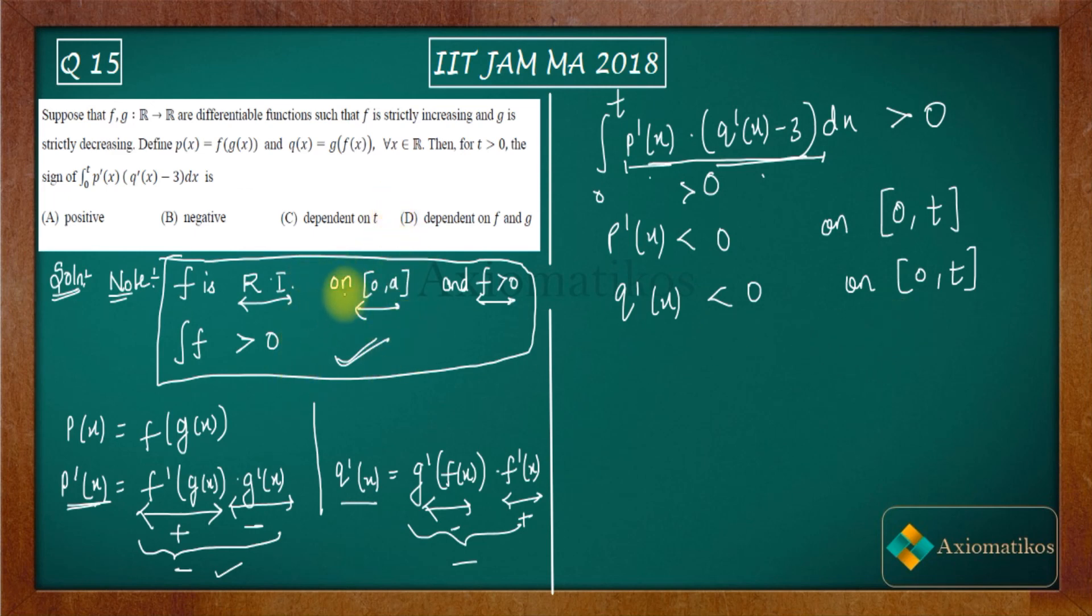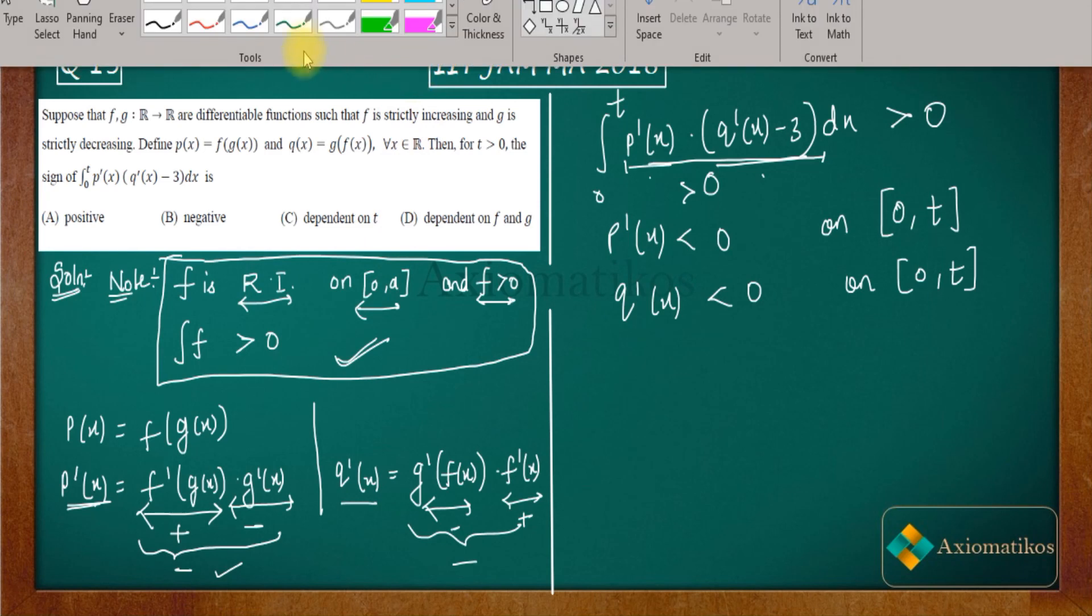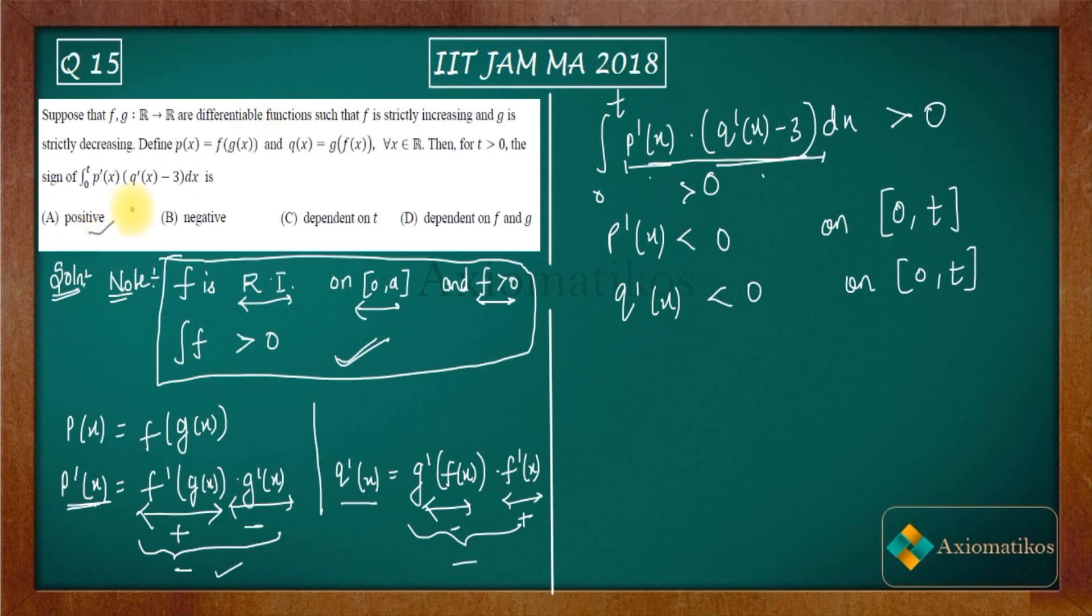what you can conclude is that option A is the correct option for you. Are you getting my point now? So A is correct, B is incorrect, C is incorrect, D is incorrect. So this is how you can solve this question. It's a very easy question. Nothing difficult in this. So thank you.